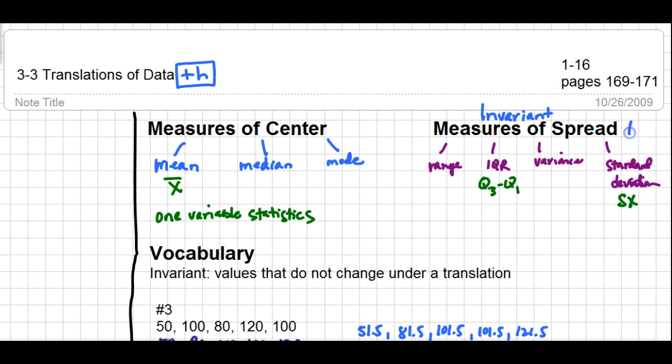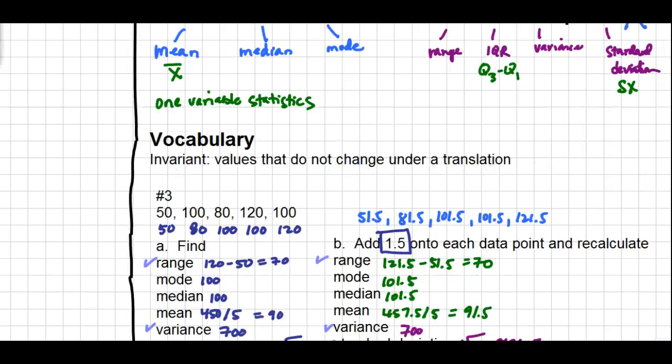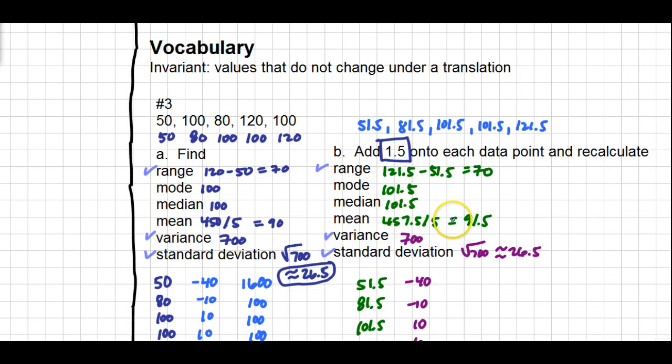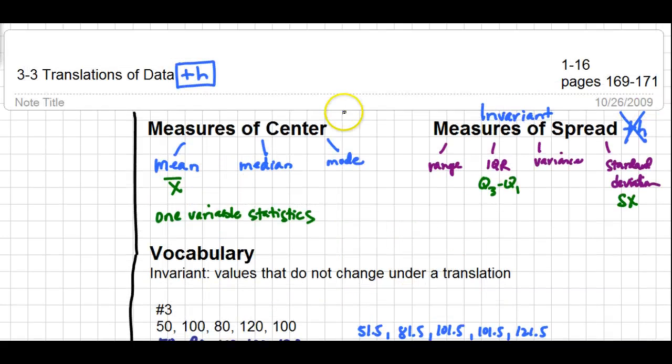So you will not add H onto the measures of spread. The measures of center, rather than recalculating all of these values, we simply could have taken the previous values and simply added 1.5 onto them. I'm going to just utilize that information moving forward with the measures of center. If I know that the data has been transformed, I can simply transform those values by adding H onto them.